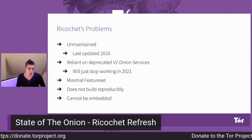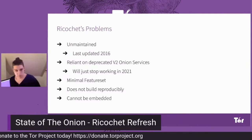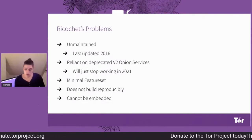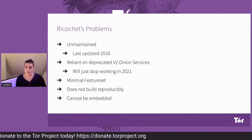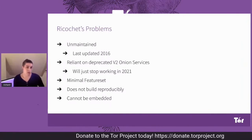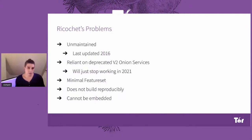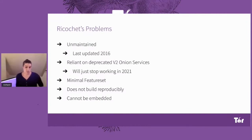It's also a bit minimal — you can have contacts and chat with them, which for some people is all you need, but we live in the 21st century now. For the nerds out there, it doesn't build reproducibly, which means you've got no guarantee that the binary anybody publishes was built from the same source code. Additionally, it can't be embedded — if you want to make some kind of anonymous chatting application, you basically have to build all that yourself, whereas it'd be great if you could just import a library that facilitates anonymous chat-like behavior and build on top of that.